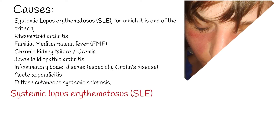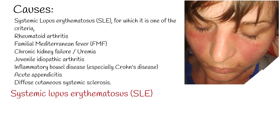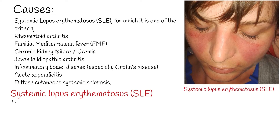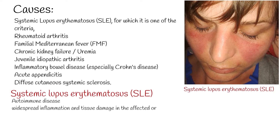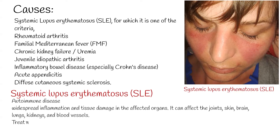Systemic lupus erythematosus (SLE) is an autoimmune disease in which the immune system attacks its own tissues, causing widespread inflammation and tissue damage in the affected organs. It can affect the joints, skin, brain, lungs, kidneys, and blood vessels.